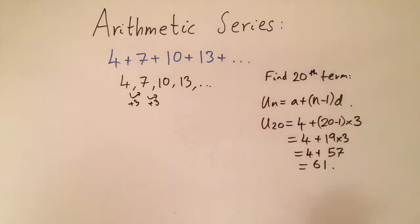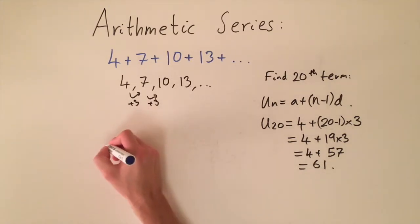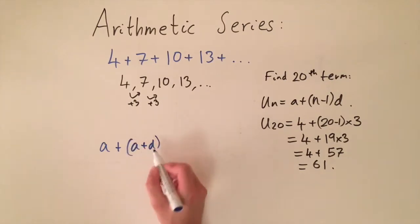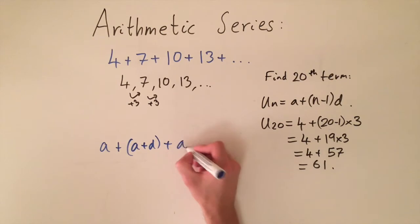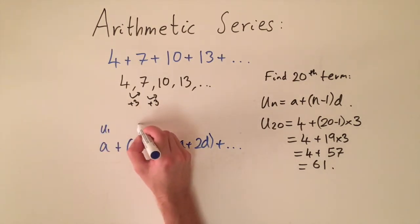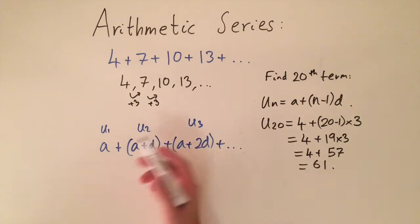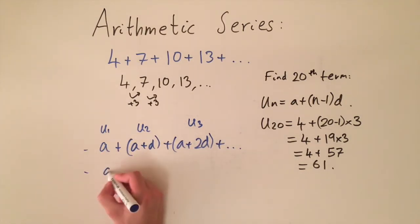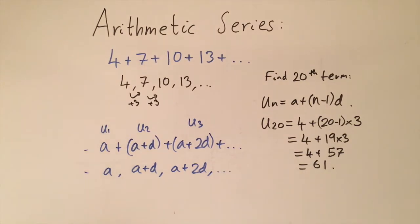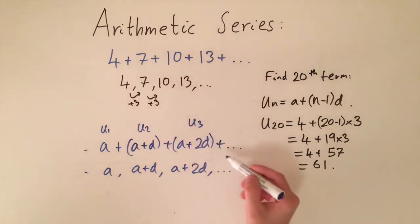Now let's write out what a general arithmetic series looks like. It's very similar to an arithmetic sequence — we just use pluses instead of commas. So it's: a + (a + d) + (a + 2d) + ... where a is the first term (u1), a + d is the second term (u2), and a + 2d is the third term (u3). The corresponding sequence would be a, a + d, a + 2d, etc. To spot if a series is arithmetic, ignore the pluses and check if the corresponding sequence is arithmetic.